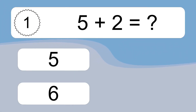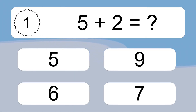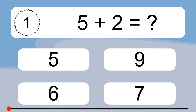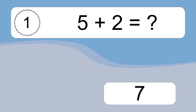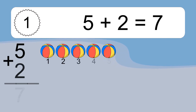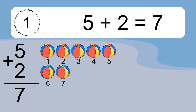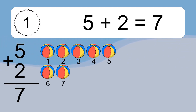5 plus 2 equals what? 5 plus 2 equals 7. Let's count it: 1, 2, 3, 4, 5, 6, 7.